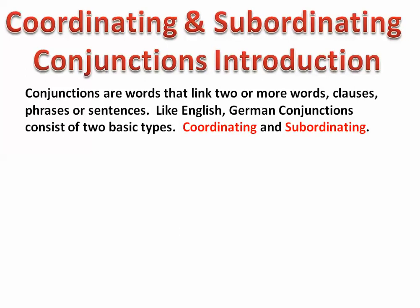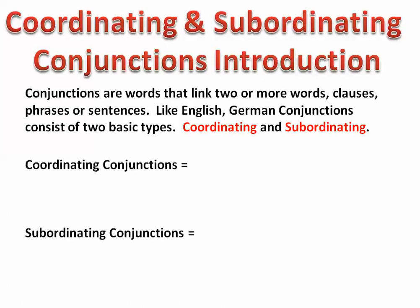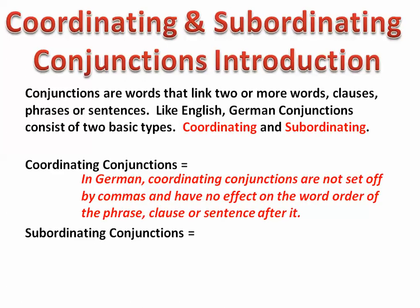Just like English, German uses conjunctions and these come in two basic types: coordinating and subordinating conjunctions. We're going to talk about each here and then do some examples with one of each so that you can see how it affects the sentence.